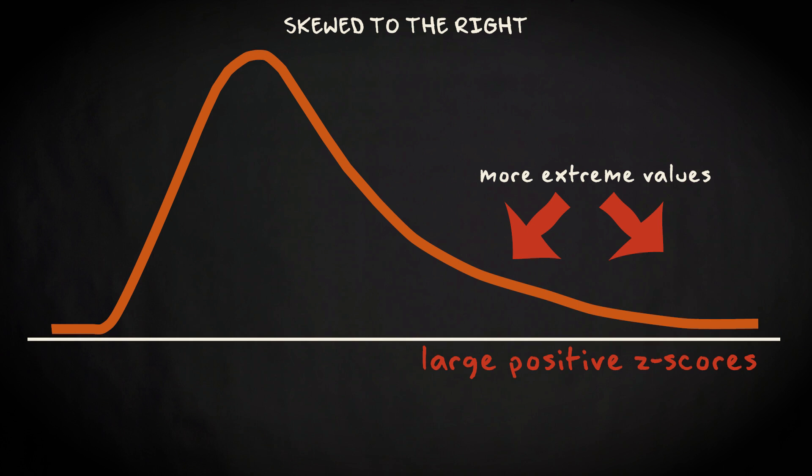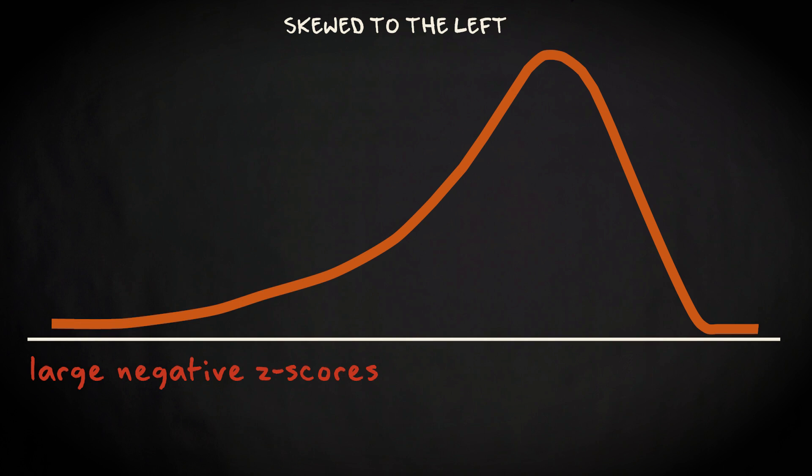Similarly, if a distribution is strongly skewed to the left, large negative z-scores are more common, because there are more extreme values on the left side of the distribution.